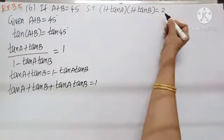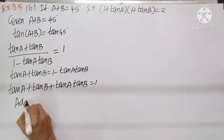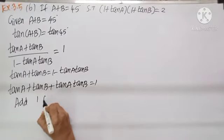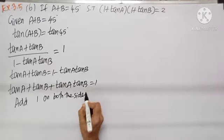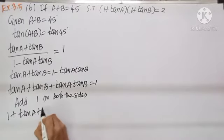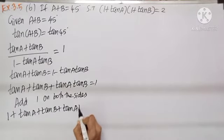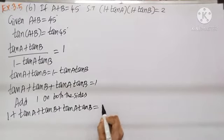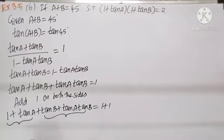Now I need 2 on the right hand side. Adding 1 on both sides, the right hand side becomes 1 plus 1 equals 2. The LHS becomes 1 plus tan A plus tan B plus tan A tan B.